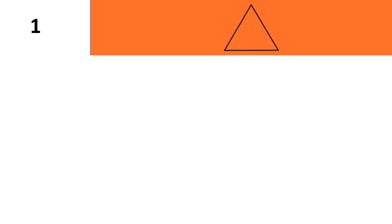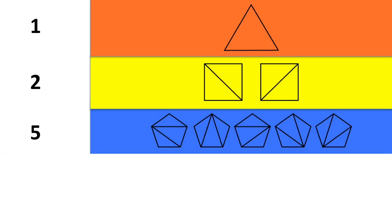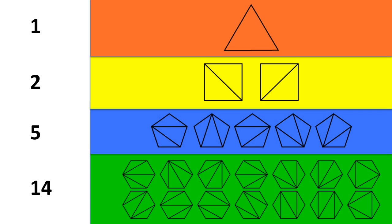How many ways can you triangulate a regular polygon? A triangle has one way, a square has two, a pentagon has five, and a hexagon has fourteen.